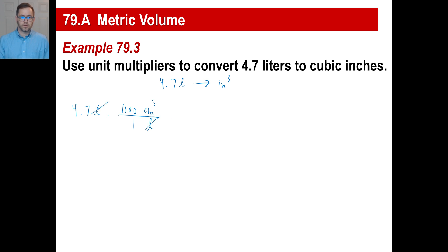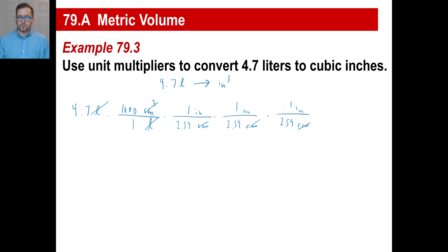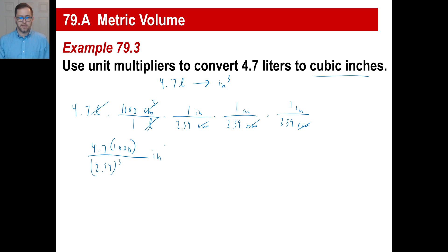Liters get crossed off. Now we have three instances of centimeters up top, so we need three more fractions. 2.54 centimeters is an inch, 2.54 centimeters is an inch, 2.54 centimeters is an inch — one, two, three centimeters gone. We have our final answer since we have inch times inch times inch — that's a cubic inch. So we have 4.7 times 1,000 on top, and on the bottom 2.54 to the third power. That's how many cubic inches we have.